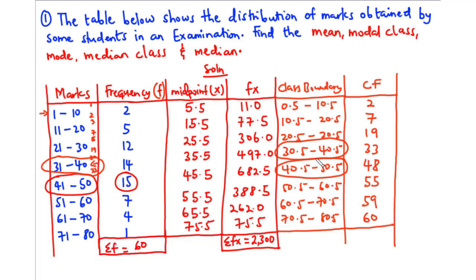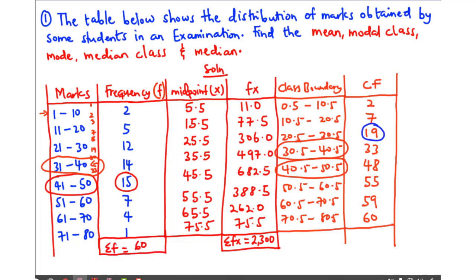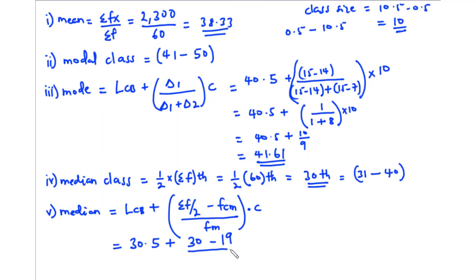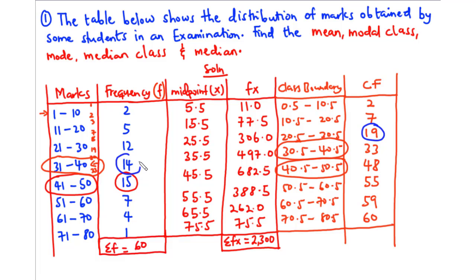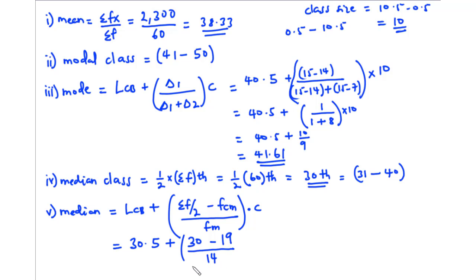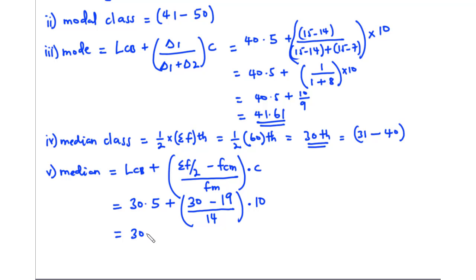fm is the frequency of the median class, which is 14, and the class size is 10. So we have: 30.5 plus (30 minus 19) times 10 divided by 14. That is 30.5 plus 110 divided by 14, which gives 38.36. So 38.36 is the median.